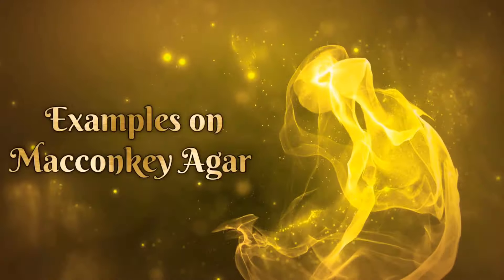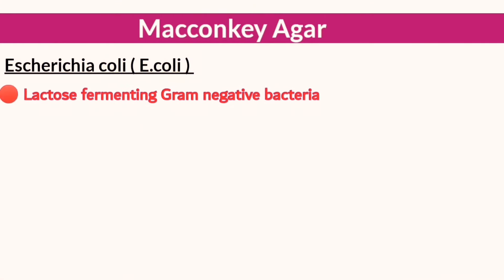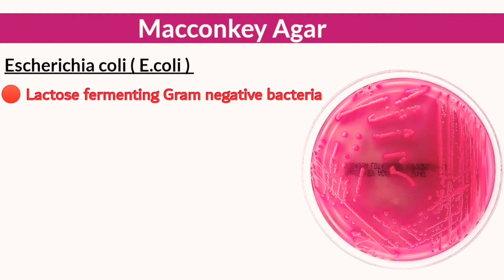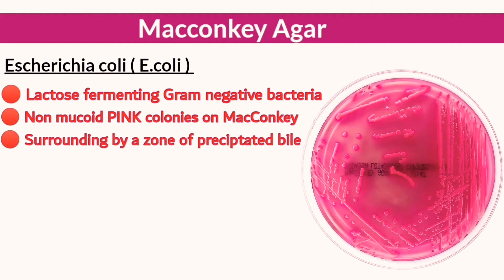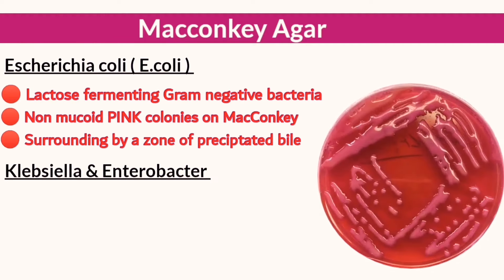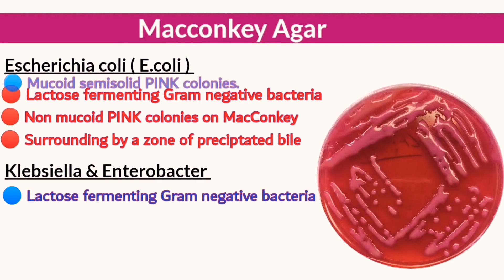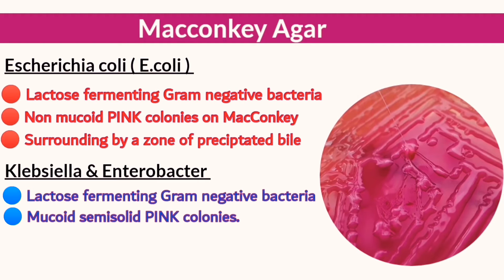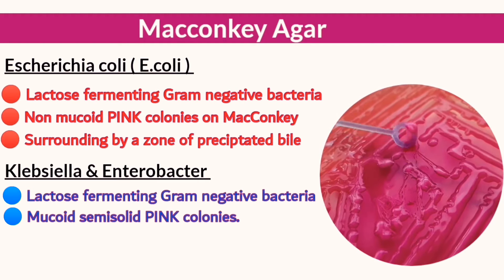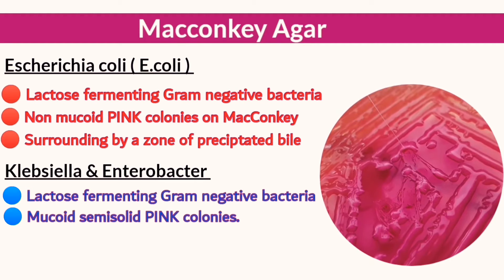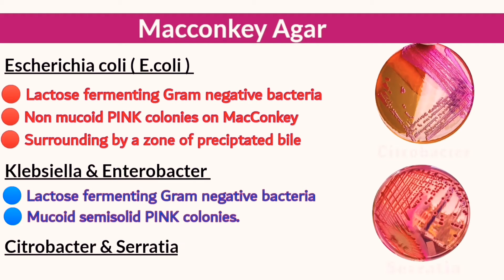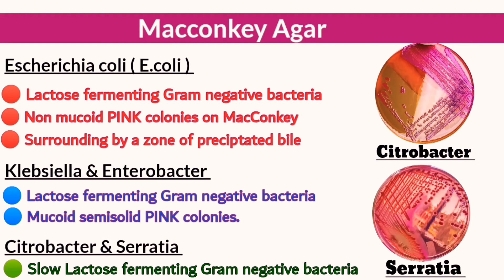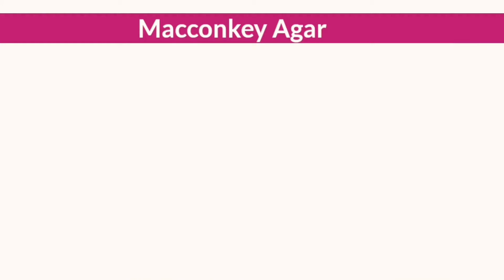E. coli is a gram-negative bacillus that ferments lactose and appears as non-mucoid pink colonies, which may be surrounded by a zone of precipitated bile. Klebsiella and Enterobacter are also gram-negative bacteria that ferment lactose and produce mucoid, semi-solid colonies due to exopolysaccharide capsule production, which protects them from phagocytosis by white blood cells. Citrobacter and Serratia also appear pink on MacConkey agar due to lactose fermentation.